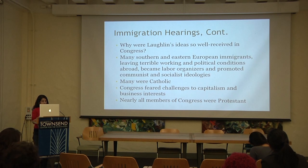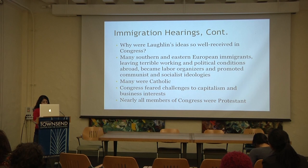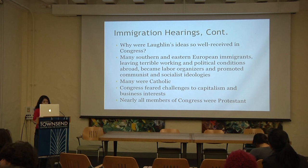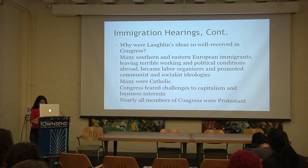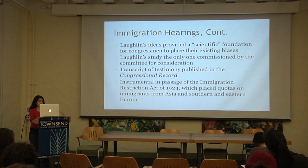So why were Laughlin's ideas so well received in Congress? Since many Southern and Eastern European immigrants became labor organizers, promoted communist or socialist ideologies, and practiced Catholicism, many members of Congress — fearful of challenges to the Protestant, capitalist, and pro-business order — were eager to hear and support his ideas. His ideas essentially provided a scientific foundation on which Congress could place its existing biases. The committee didn't even commission any other reports during its immigration hearings. A transcript of Laughlin's testimony was published in the Congressional Record and was instrumental in the passage of the Immigration Restriction Act in 1924.